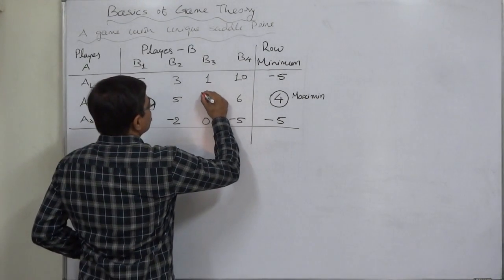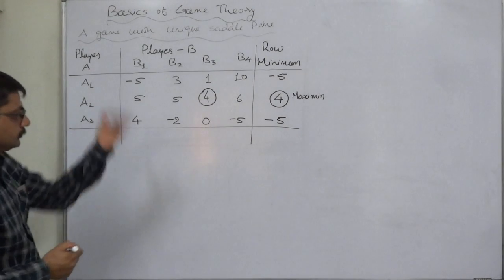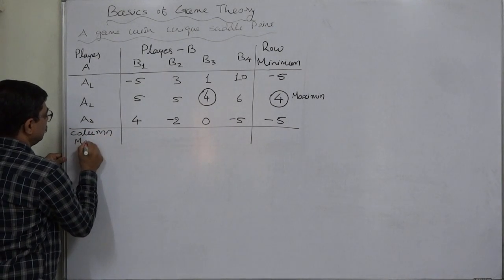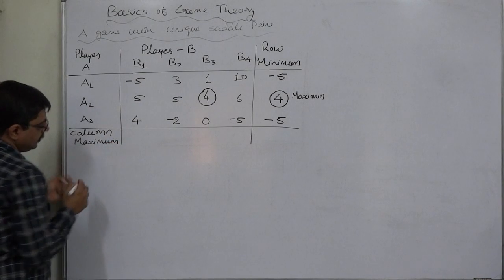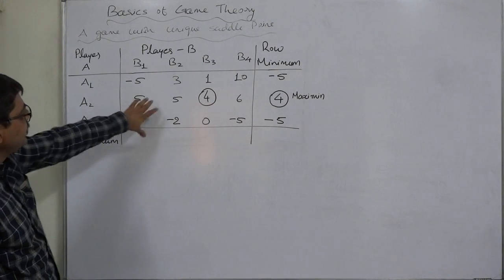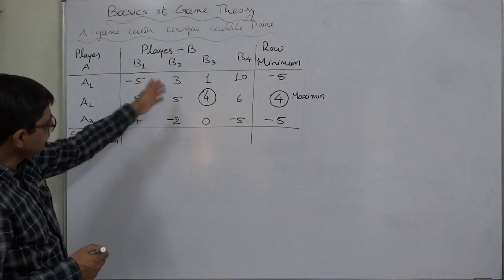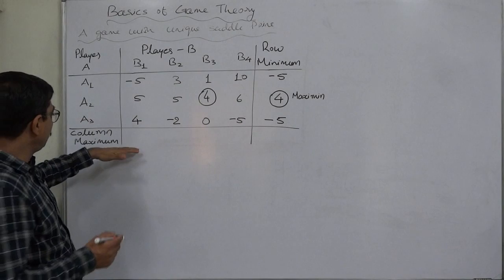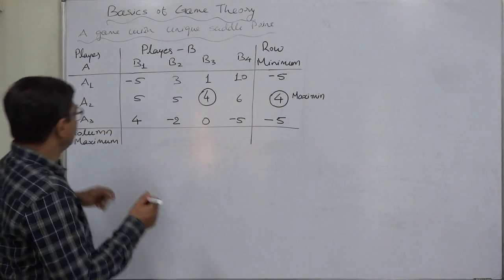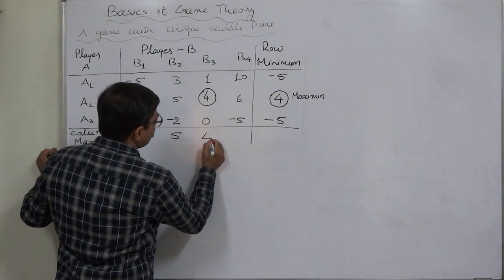Next, find the column maximum — the maximum value from each column. That means if player B selects strategy B1, what is the maximum possible payoff? We find the maximum values from all the columns, that is, all the strategies available to player B.